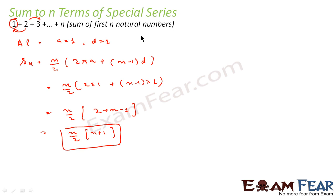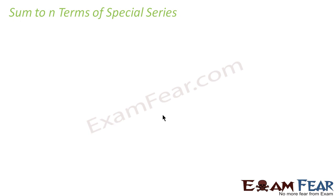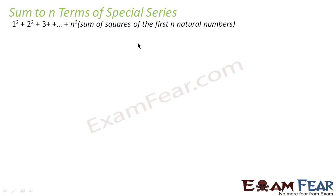Let's take another special series: 1² + 2² + 3² + 4² + ... + n², that is the sum of squares of the first n natural numbers. This is a little tricky, because 1², 2², 3², ... are neither in GP nor in AP, so we have to convert this into a form that involves AP or GP.